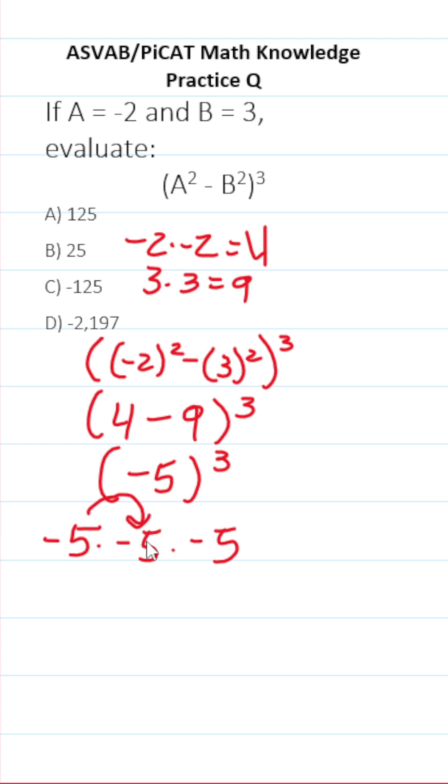Negative 5 times negative 5, a negative times a negative is a positive. This is positive 25. Positive 25 times negative 5. Again, positive times a negative is a negative. 25 times negative 5 is negative 125. So the correct answer is C, negative 125.